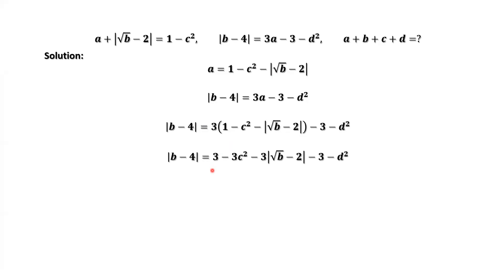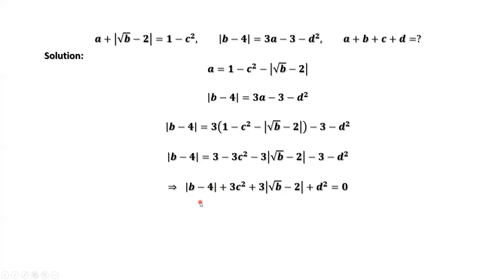Simplify. We have 3 minus 3c squared minus 3 times the absolute value of the square root of b minus 2, minus 3, minus d squared. The 3 and negative 3 cancel each other. Moving everything to the left-hand side, we have: absolute value of b minus 4, plus 3c squared, plus 3 times the absolute value of the square root of b minus 2, plus d squared, equals 0.